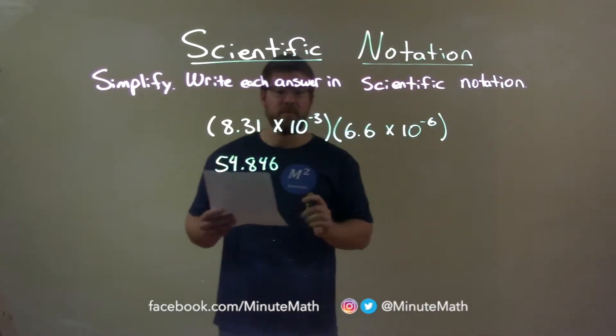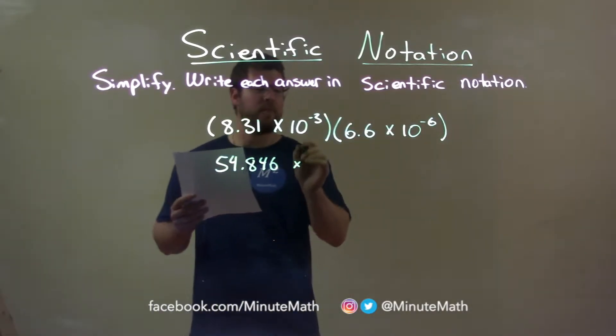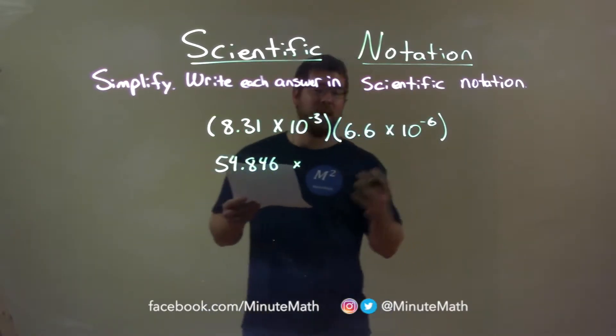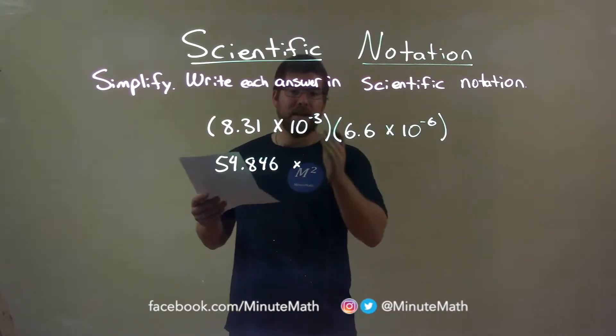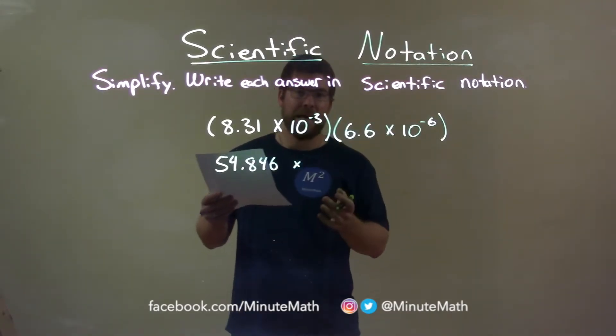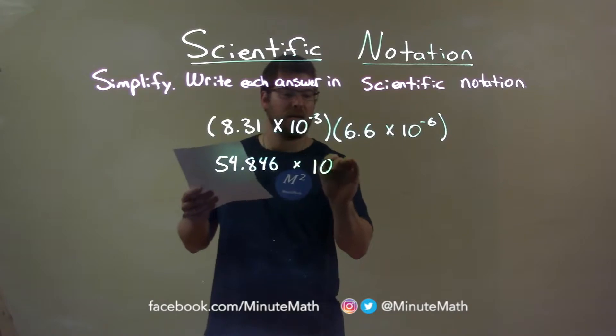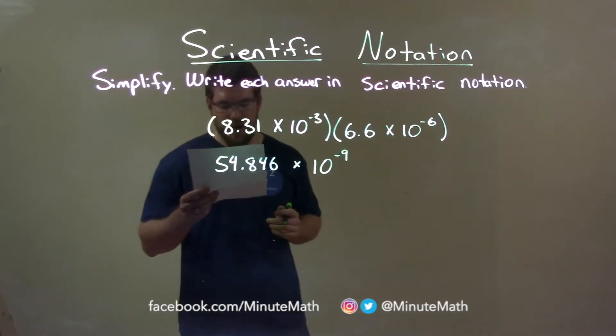Now the tens. When we multiply the tens out, we have the same base, so we just have to add the exponents. 10 to the negative third times 10 to the negative sixth. Negative 3 plus negative 6 equals negative 9. So that's 10 to the negative ninth power.